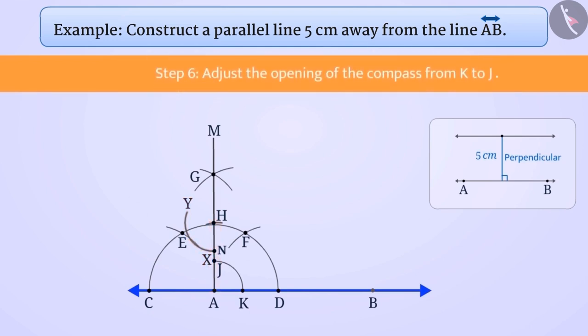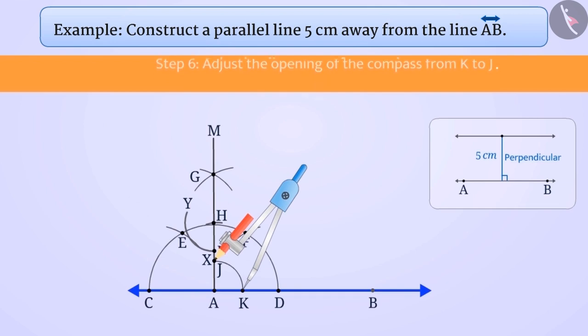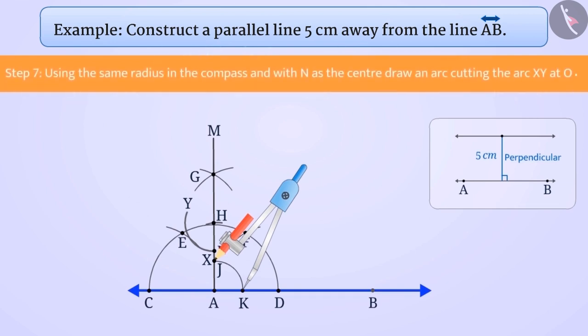Step 6: Place the pointed tip of the compass at K and adjust the opening so that the pencil tip is at J. Step 7: With the same opening as in the previous step and with N as center, draw an arc cutting the arc XY at O.